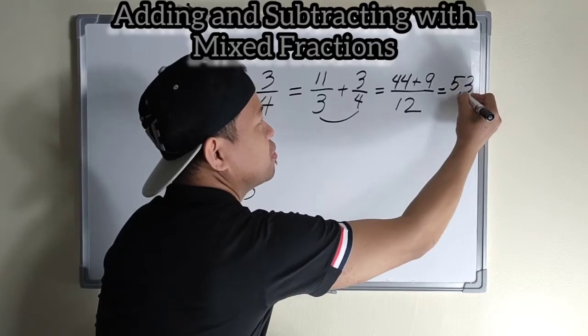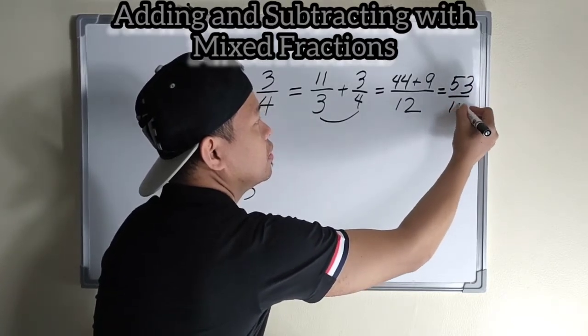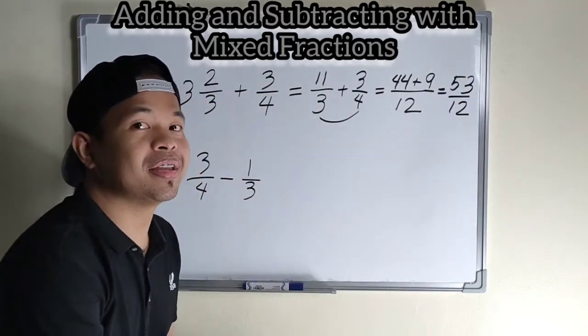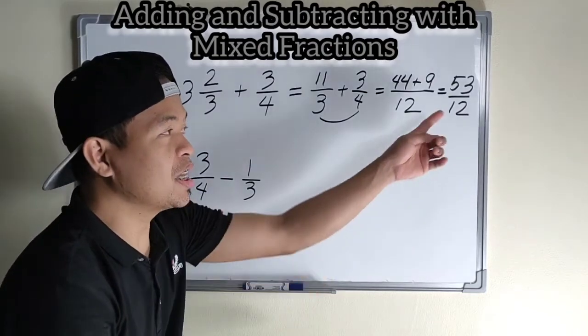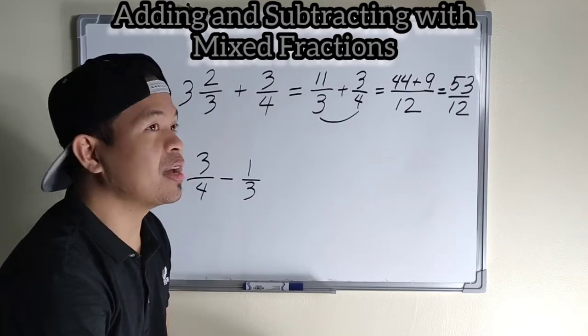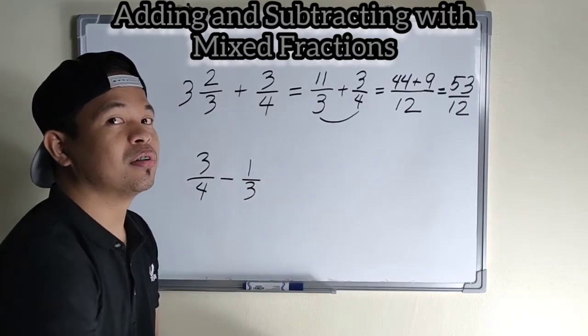Very good. So fifty-three over twelve. Yan na ba yung final answer natin? Hindi po. Kasi improper fraction sya. So gagawin natin mix fraction.